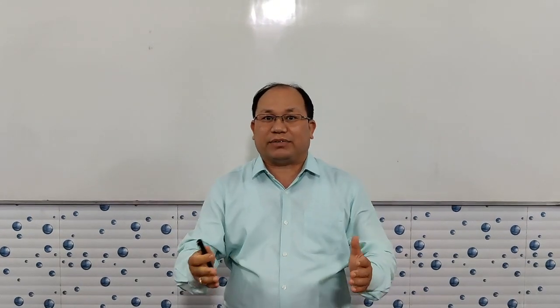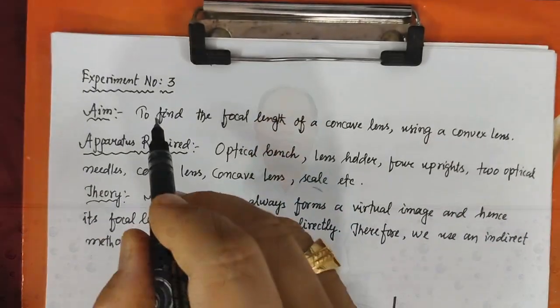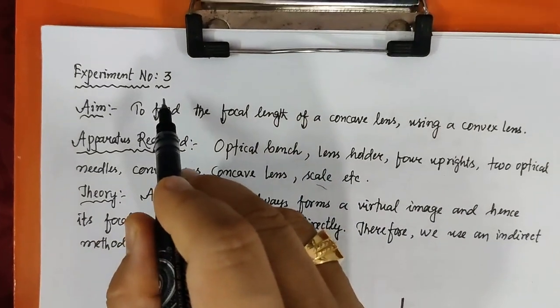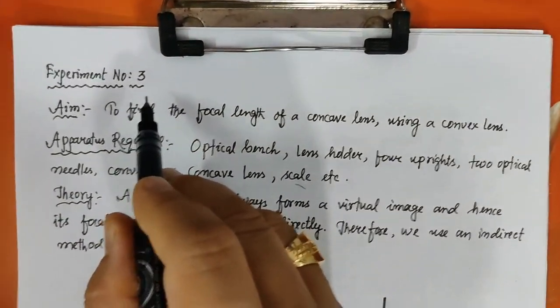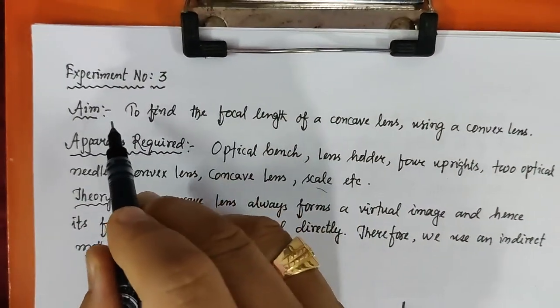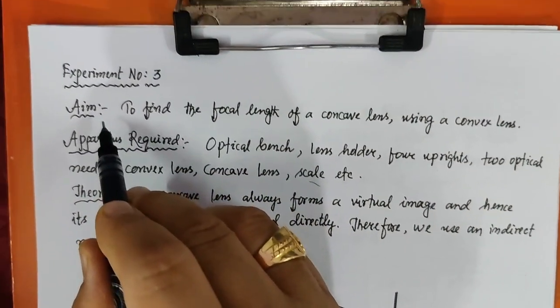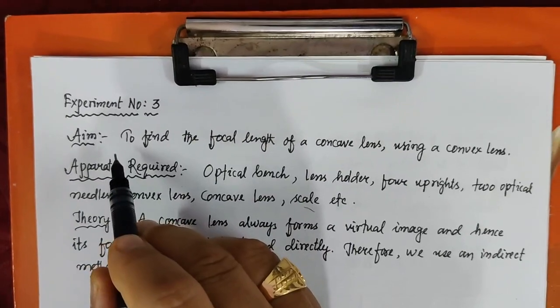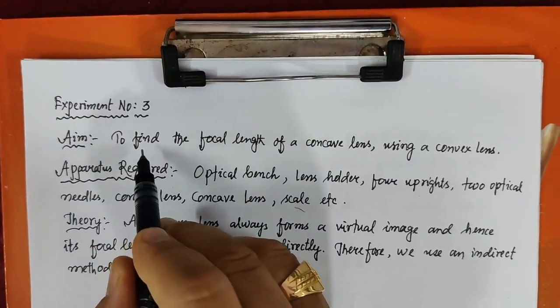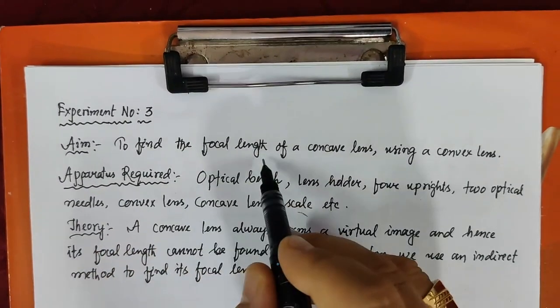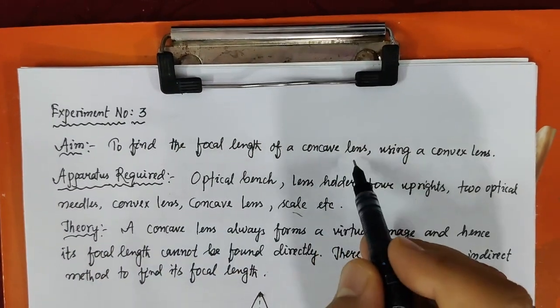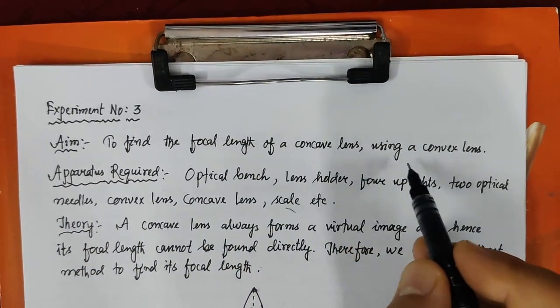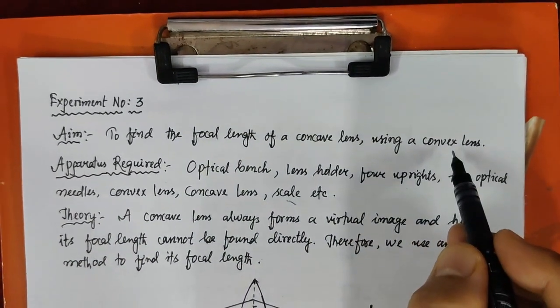Here is the title — experiment number 3 from the optic side. The aim of this experiment is to find the focal length of a concave lens using a convex lens.